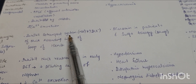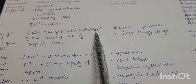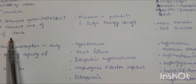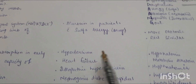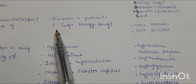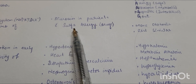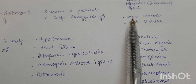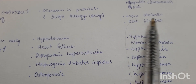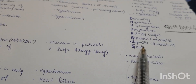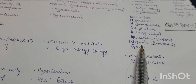One group I should mention is ethacrynic acid, a non-sulfonamide loop diuretic. It inhibits the co-transport system of sodium, potassium, and two chloride ions of the thick ascending limb of the loop of Henle. Its main clinical use is diuresis in patients with sulfa allergy. Its adverse effects include being more ototoxic than other loop diuretics, with the rest similar to the O DANG mnemonic.